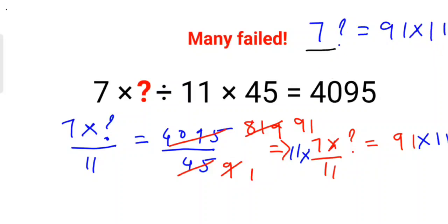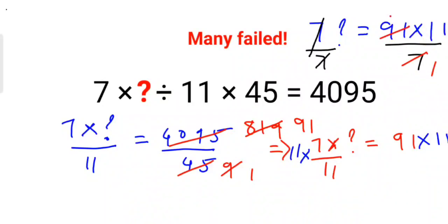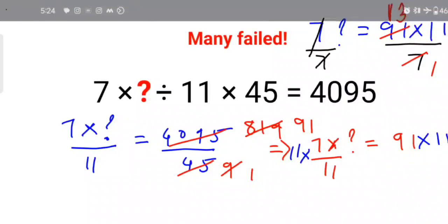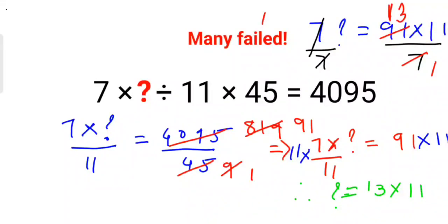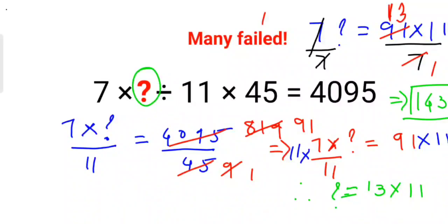I would do the division first rather than the multiplication, because I can see that 7 thirteens are 91. Therefore, the value of question mark is 13 into 11, which is 143. That is the value for question mark in this particular question. That's it for today, I will see you in the next video.